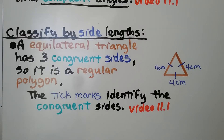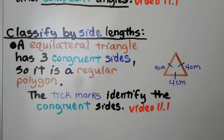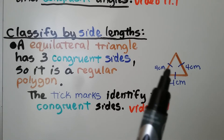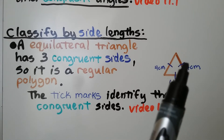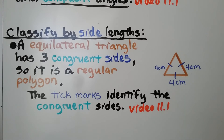We can classify triangles by their side lengths. An equilateral triangle has three congruent sides, so it's a regular polygon. Each side will be the same measure, and the little tick marks identify the congruent sides. Because they all have one little tick mark, they're all congruent to each other.